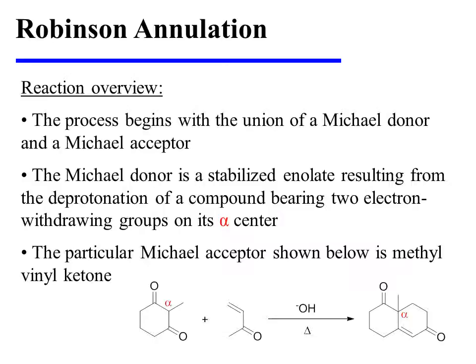The Robinson annulation begins with the union of a Michael donor and a Michael acceptor. The Michael donor is a stabilized enolate resulting from the deprotonation of a compound bearing two electron-withdrawing groups on its alpha center.